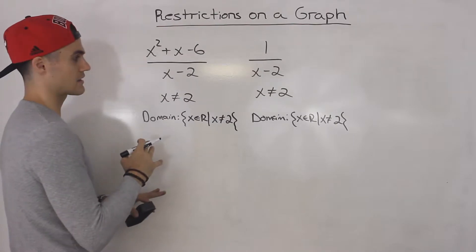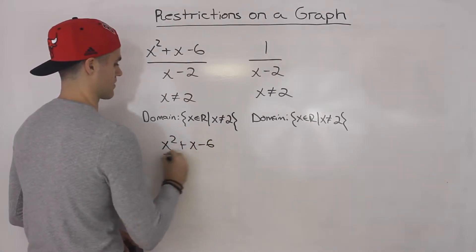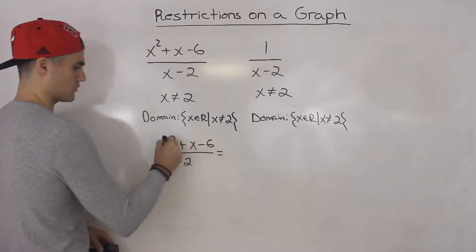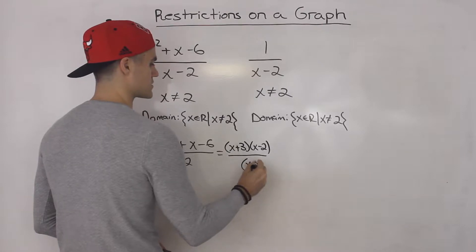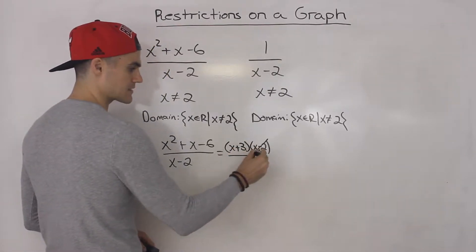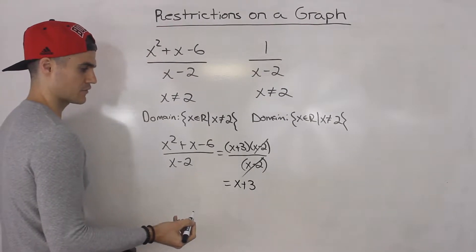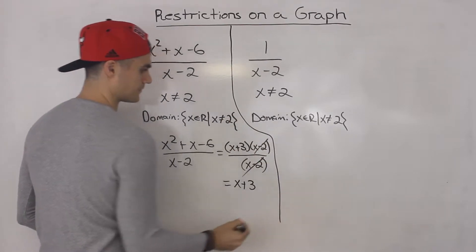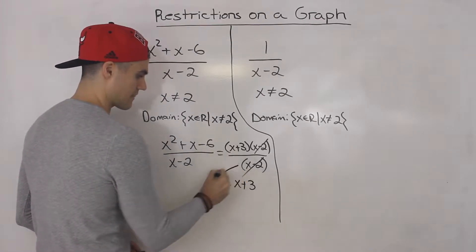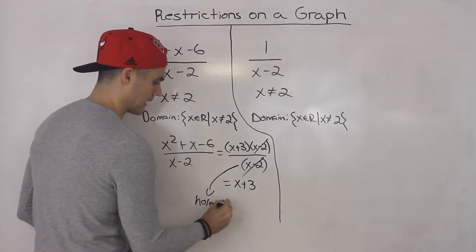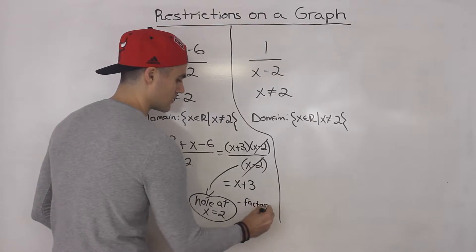However, how are both of these going to look on a graph? Well, taking the first expression, what happens when we simplify it? We would factor the numerator, which would be x plus 3 times x minus 2, and then we'd have x minus 2 on the bottom. Notice that the x minus 2's cancel out, so we're just left with x plus 3. When factors cancel out, that means there is a hole at that restriction — at x is equal to 2.